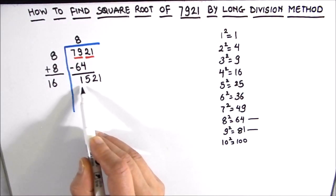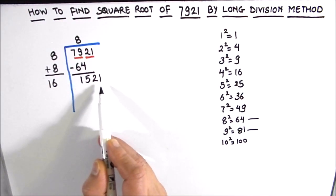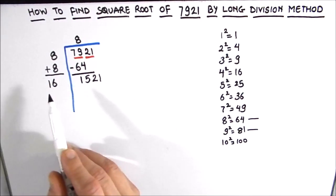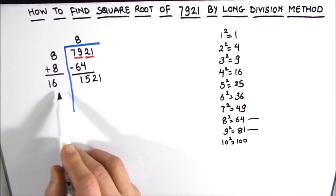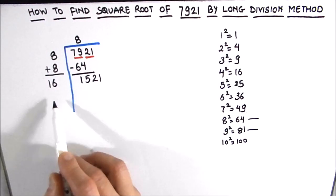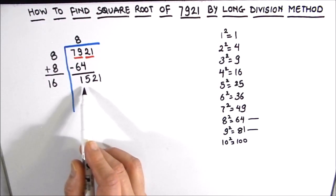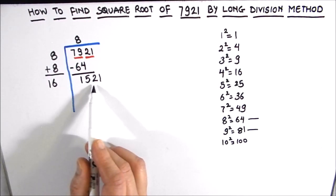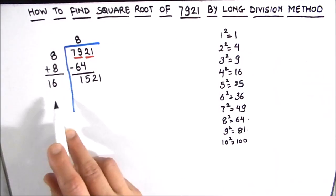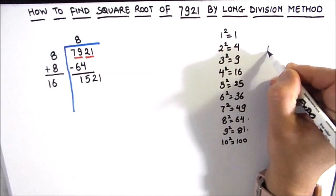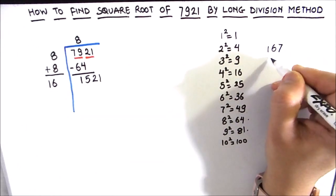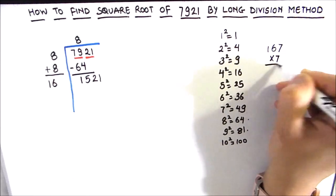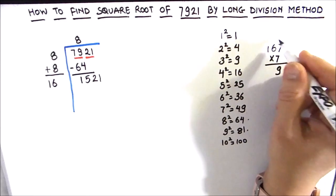Our new divisor will be chosen by adding a digit whose product with the whole number gives a value less than or equal to 1521. By trial and error, let's try 7: 167 × 7. Seven times 7 is 49.